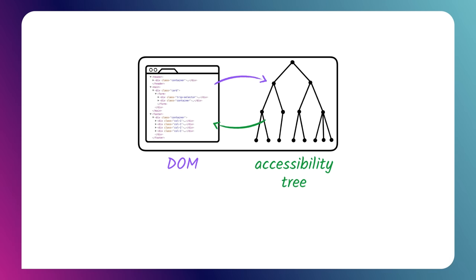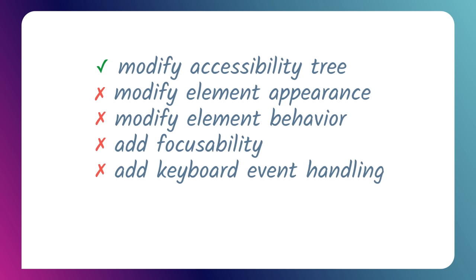In terms of the accessibility tree, what ARIA does is allow you to do tree surgery. You take the accessibility tree generated by plain HTML, add ARIA, and get a different accessibility tree — subtly or radically different depending on what attributes you use. However, keep in mind this is the only thing ARIA changes. It doesn't change how the element behaves on the page — it won't make your element focusable, it won't add keyboard event listeners. ARIA does not change behavior in any way; it only adds semantics. So if you're making a custom control, you still need to add keyboard support yourself.